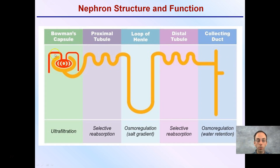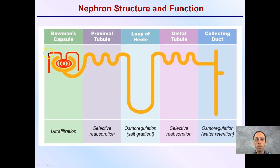In this stretched-out view we have filtration, selective reabsorption, osmoregulation and salt gradient, selective reabsorption again, and then water retention at the very end. This is stretched out to give you the idea of what it looks like — in reality it is much more condensed because you're trying to fit 1.3 million nephrons in each kidney.